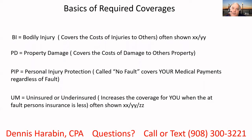Before you can customize your insurance for exactly what you need, it's important to understand what it is, what you have, and how you go about getting it. Not everyone understands what all the abbreviations mean. So BI — that's your bodily injury — that actually protects another individual when you have an accident. That's the cost of bodily injury to others.